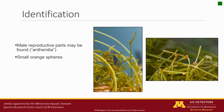You may also observe male reproductive parts, called antheridia. These are small orange spheres, but are not present at all times of year, and native lookalikes can have similar looking antheridia.